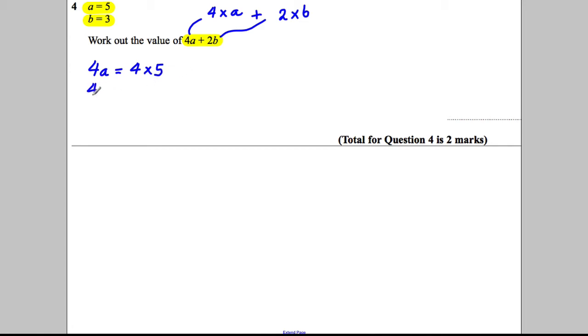So 4A is equal to 20. And 2B—2B is equal to 2 multiplied by whatever B is, and B is 3, so 2B would be equal to 6.